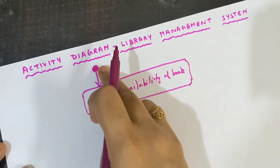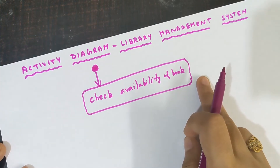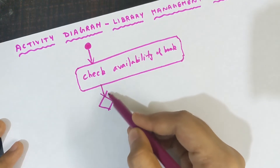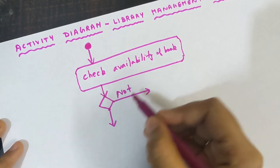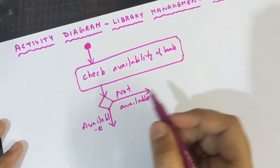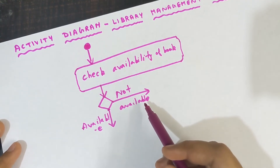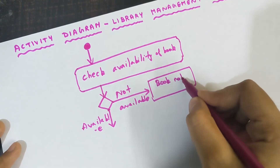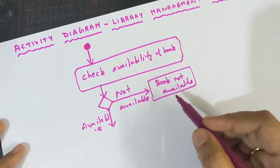After checking for the availability of the book, you are going to use a condition. For a condition, you need to put a diamond box. Don't forget to put the downward arrows. The two options are: 'not available' and 'available'. If the book is not available, then you write the message that the book is not available. When the book is not available, you have nothing to do in the library, so you can end the process.